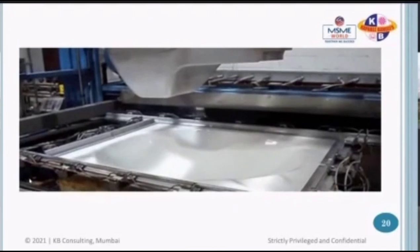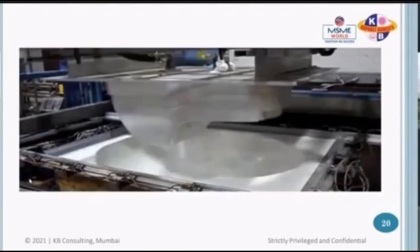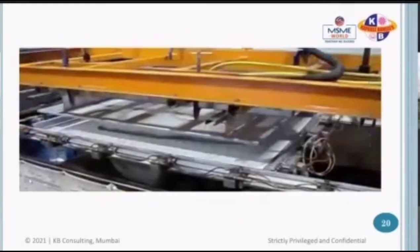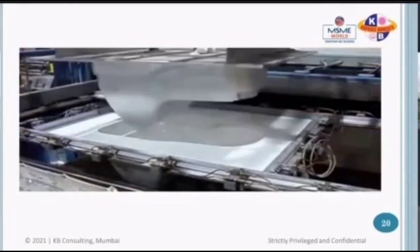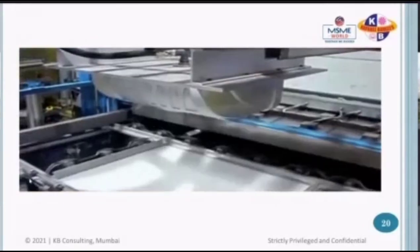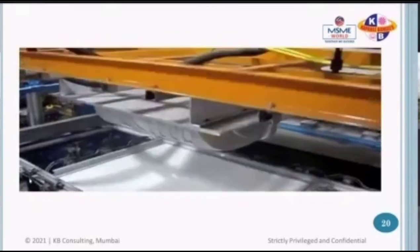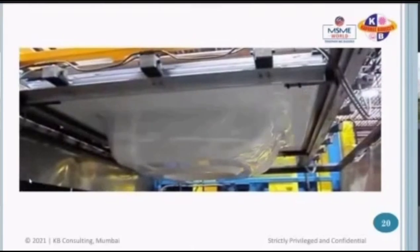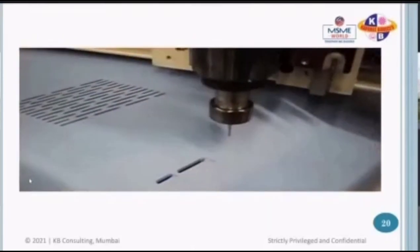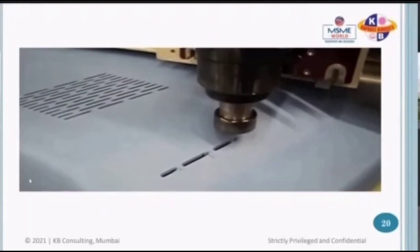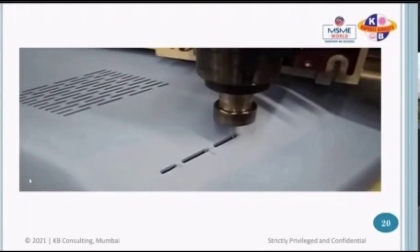In another example, the female half is on the bottom and the male half on top — both close and vacuum is applied and the product is manufactured. In yet another example, the die comes from the top and vacuum is applied. Once the product is manufactured, further modifications or additions can be done — for example, a drilling machine can be used to drill particular holes in the product.